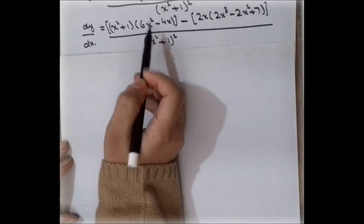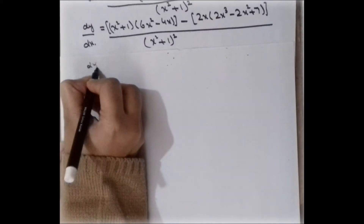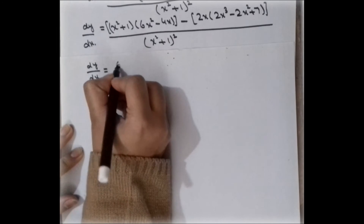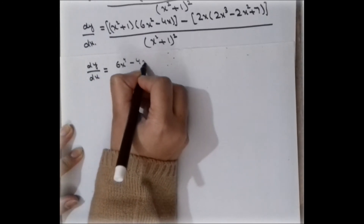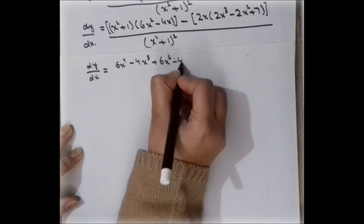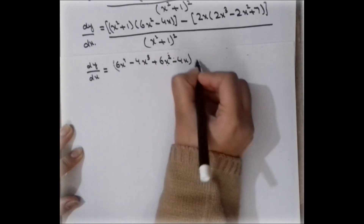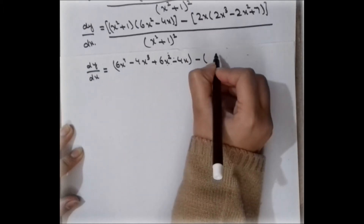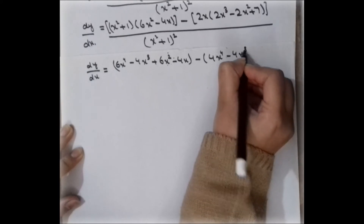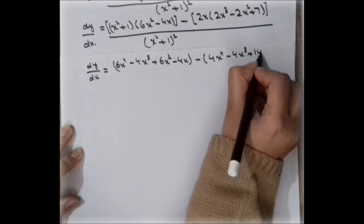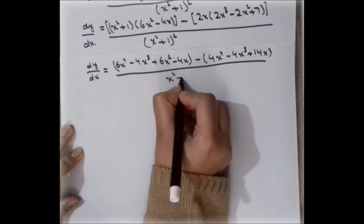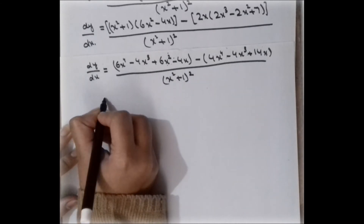So dy over dx equals (x squared plus 1)(6x squared minus 4x) minus 2x times (2x cubed minus 2x squared plus 7), all divided by (x squared plus 1) squared. Multiplying out: 6x to the fourth minus 4x cubed plus 6x squared minus 4x, minus (4x to the fourth minus 4x cubed plus 14x), divided by (x squared plus 1) squared.